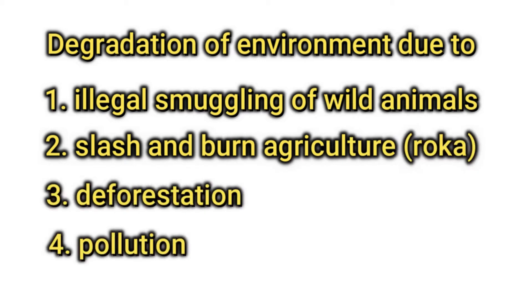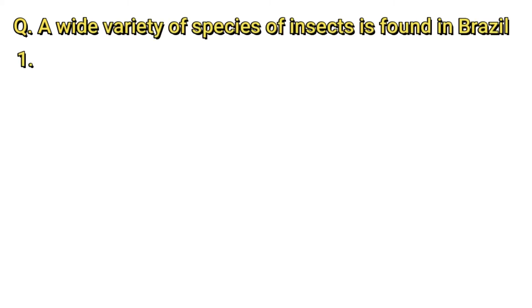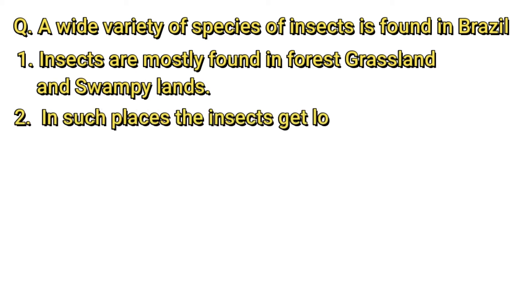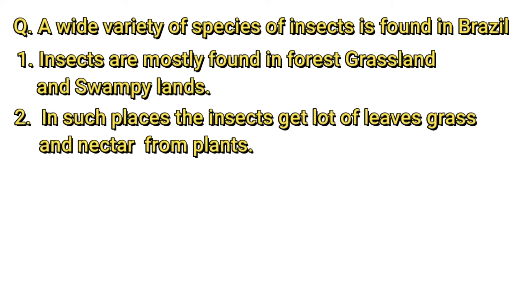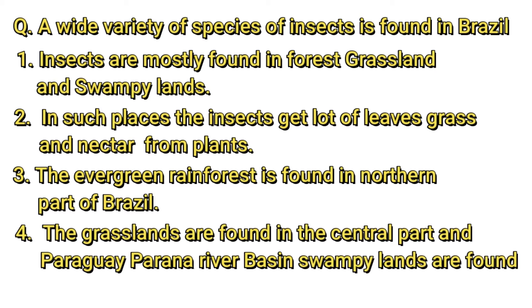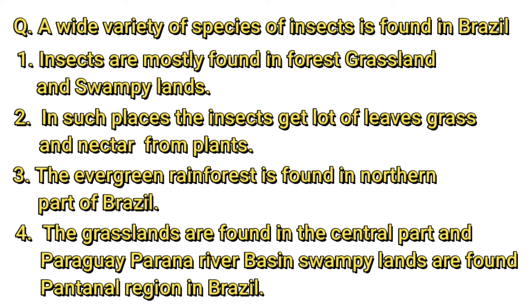Many species are on the verge of extinction because of these issues. A wide variety of insect species is found in Brazil because insects are mostly found in grasslands and swampy lands, where they get leaves, grass, and nectar from plants. It rains a lot in the northern part of Brazil, making the land marshy and wet — ideal for insects. Grasslands are found in central Brazil and the Paraguay-Paraná river basin, and swampy lands are found in the Pantanal region.